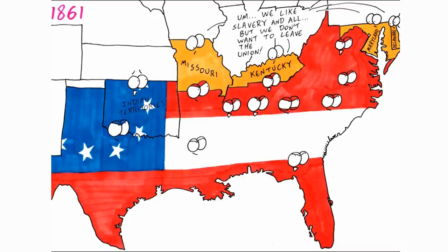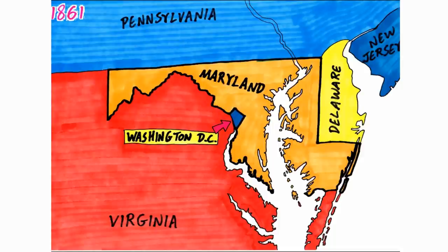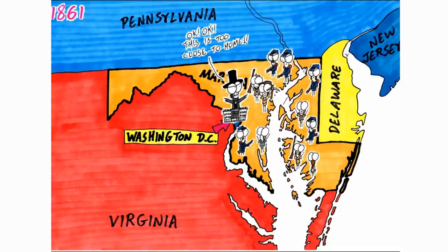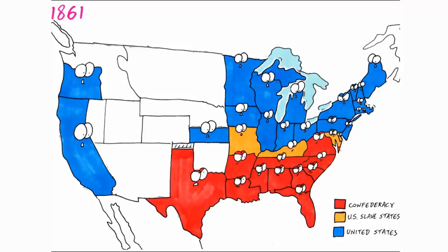Other border states — Maryland, Kentucky, Delaware, and Missouri — were slave states but were against both the South's secession and fighting against the South. As Union soldiers from the North moved towards Maryland, anti-Lincoln protesters rioted. Lincoln declared martial law in Maryland and Union naysayers were imprisoned, otherwise Washington DC could be surrounded by Confederate states. Feeling forgotten by the Union, the Arizona territories seceded and later joined the Confederacy.